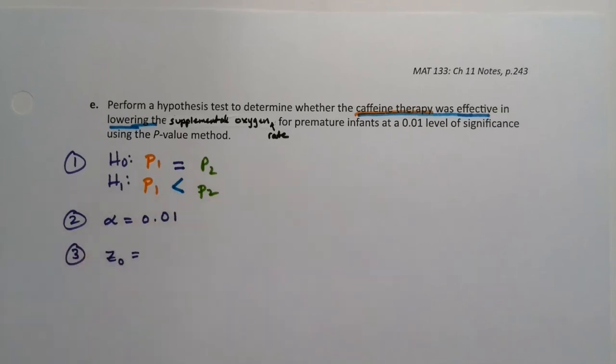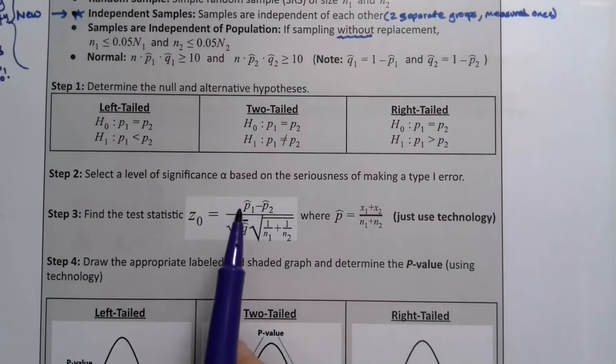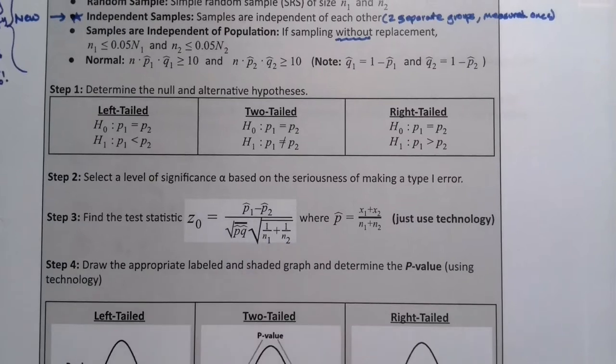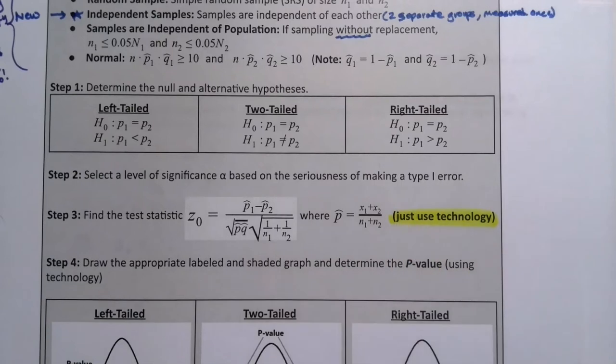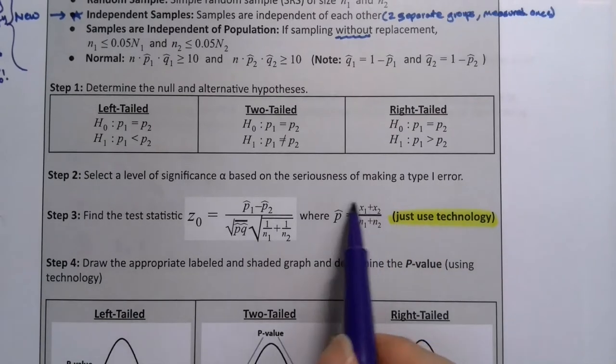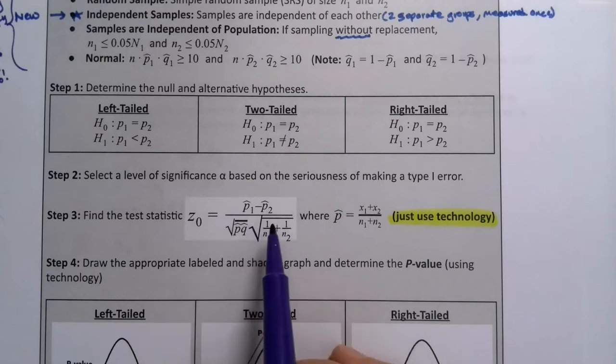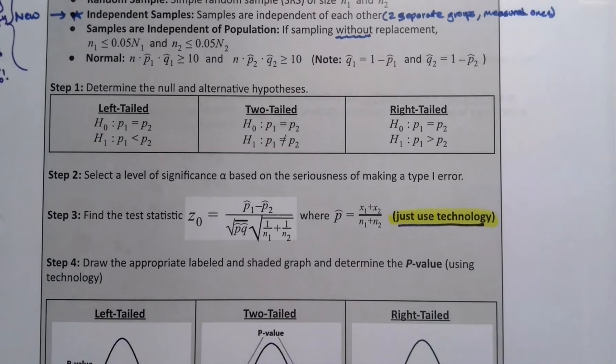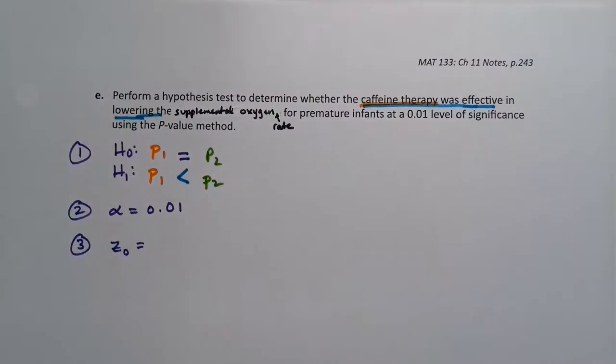Step three, we want Z zero. And there's a little trick to this. I'm not going to have you do the whole formula. I say it just use technology, because the formula itself gets really complicated. You actually have a separate P hat to figure out that's not P one hat nor P two hat that would have to be figured out, and then its complement figured out, and then you put it under a square root and all this jazz. We're not going to do it. We're just going to use technology. So all we're going to do is get StatCrunch and/or our calculator to do this.